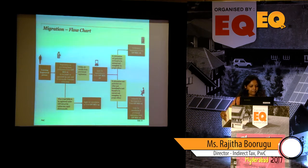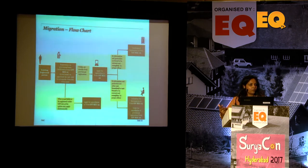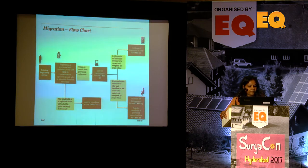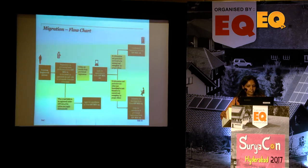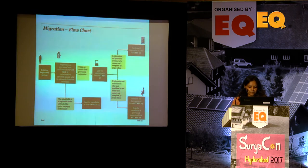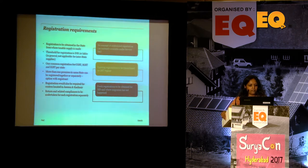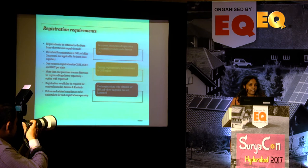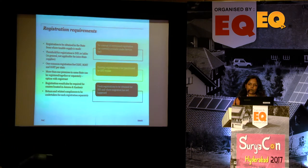On registration — there is a migration process where existing registrations receive a provisional registration under Form GST-21. We then apply for original registration in Form 20, and if details are correct, a certificate is issued in Form 6. Otherwise, an intimation for more details is issued. The registration certificate must be displayed at the entrance of business premises. Registration must be obtained in every state where there is a place of business, with a threshold of 20 lakh rupees of revenue.